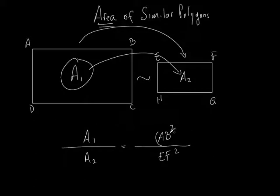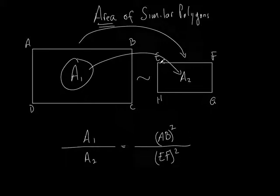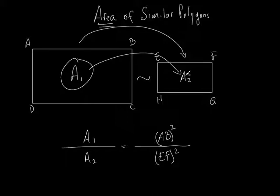Remember, this represents the length of a side and this is its corresponding side. There are four numbers: the area of the first polygon, the area of the second one, one side, and its corresponding side. They're going to give you three of those four things, and you just have to figure out what the fourth one is. That's all it is — it's really simple.